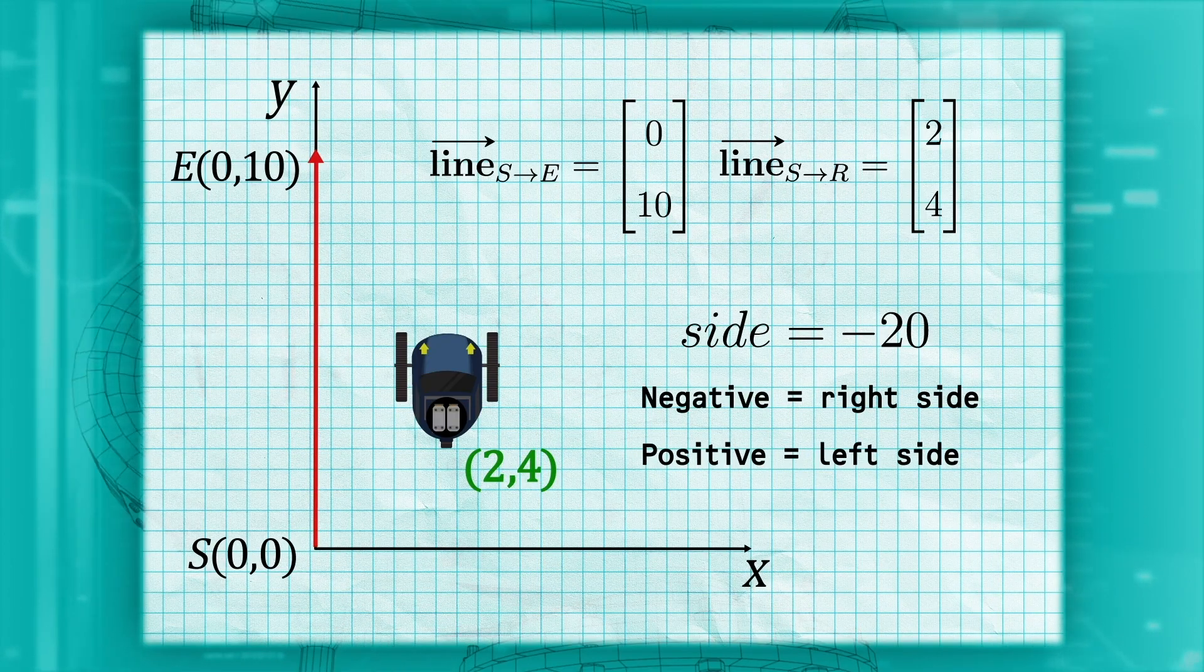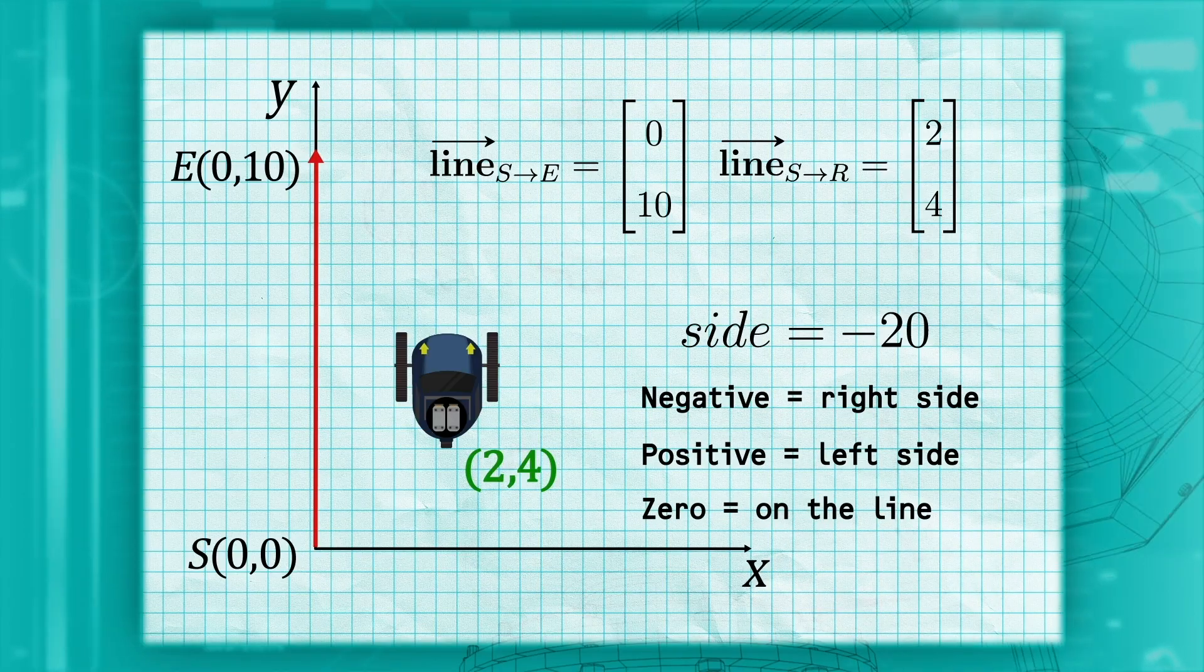If it were positive, we would be on the left side, and if we are on the line, it would be 0.